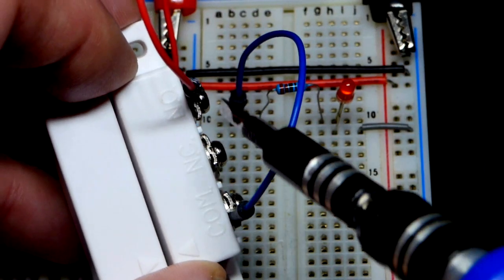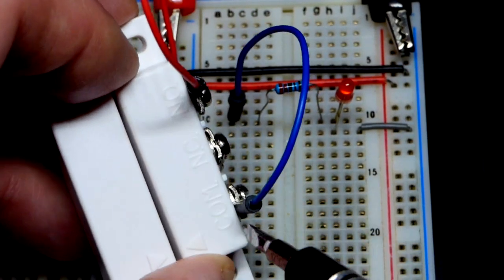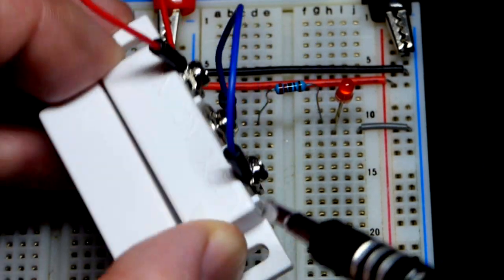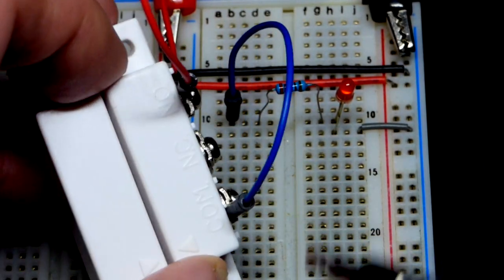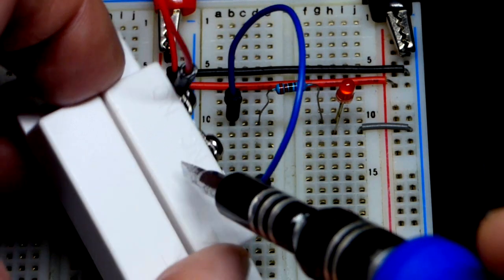Now I move the wire over to the normally open position right there instead of normally closed. COM has to stay right there. We need that one. We got this other one.